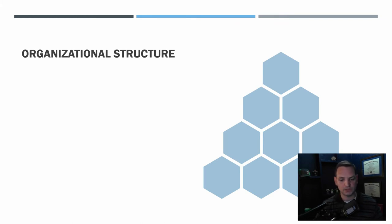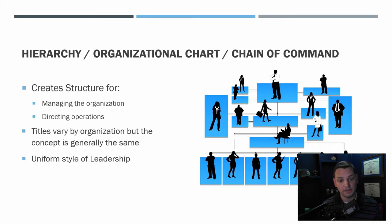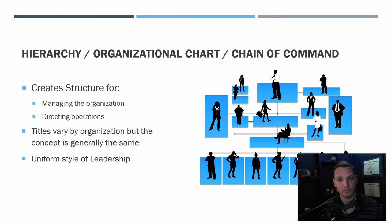Now let's talk about organizational structure. In an organization, you have a hierarchy — also called an organizational chart or chain of command, depending on your company. If you're in the government sector, it's usually a chain of command; in a corporate sector, you'll have an organizational chart. This creates structure for managing an organization and direction of operations. Anywhere you work with more than five or ten people, you've got some kind of organizational chart.